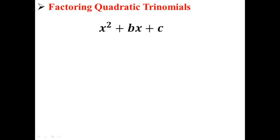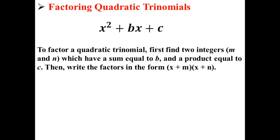Here we have a quadratic trinomial in the form x squared plus bx plus c. How would we factor this quadratic trinomial? Well, to factor a quadratic trinomial, first find two integers m and n which have a sum equal to b and a product equal to c. Then write the factors in the form x plus m times x plus n.